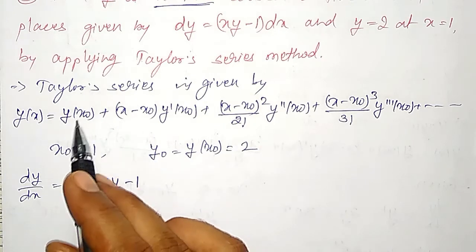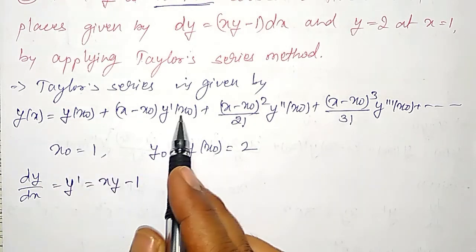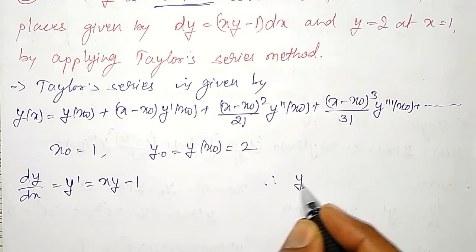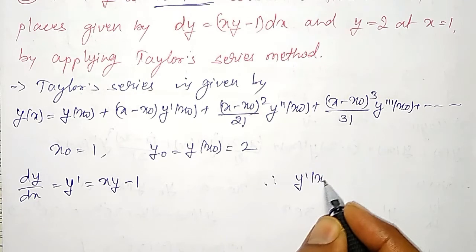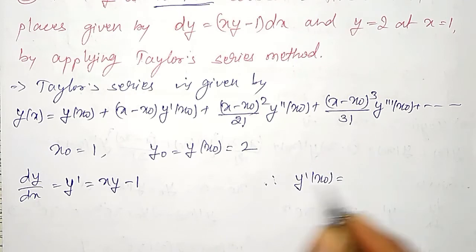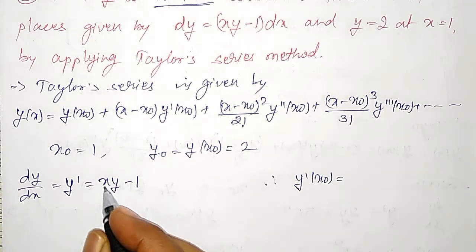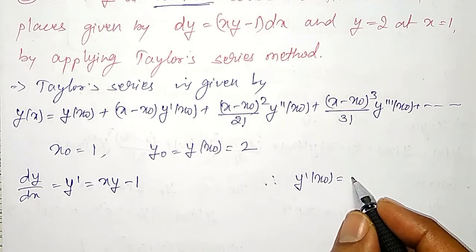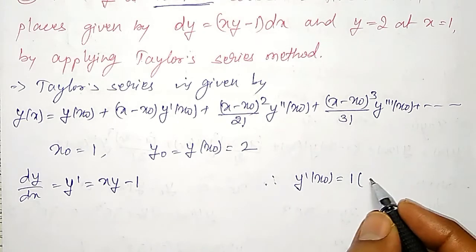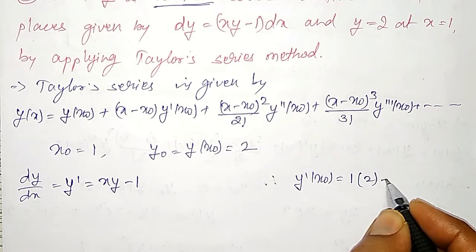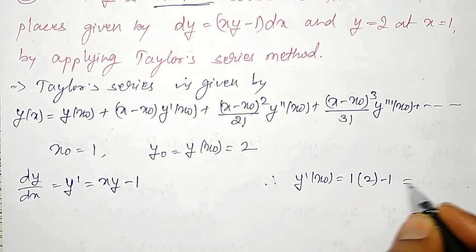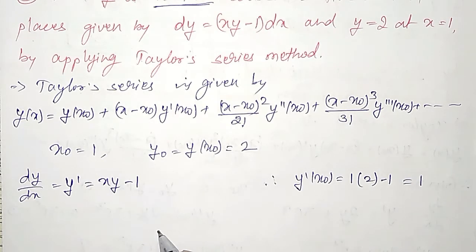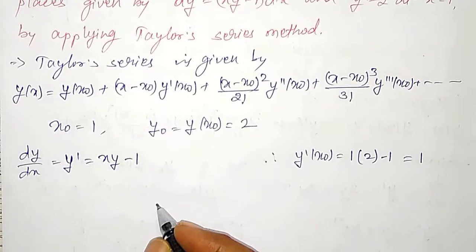Therefore, y'(x₀): substituting x = x₀ = 1 and y₀ = 2, we get y'(x₀) = 1·2 − 1 = 1.